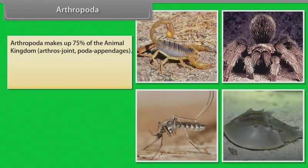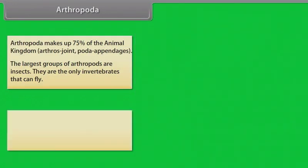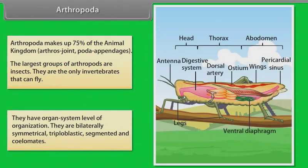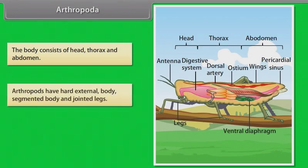Arthropoda makes up 75% of the animal kingdom. Arthros means joint and poda means appendages. The largest group of arthropods are insects — they are the only invertebrates that can fly. Arthropods have organ system level of organization, are bilaterally symmetrical, triploblastic, segmented and coelomate. The body consists of head, thorax and abdomen.